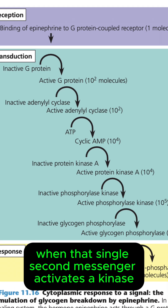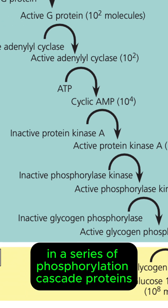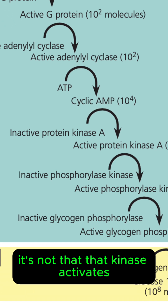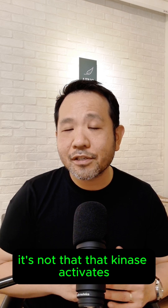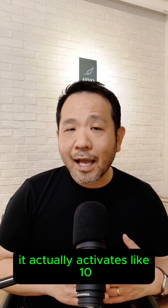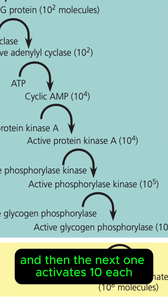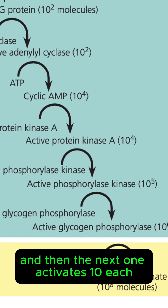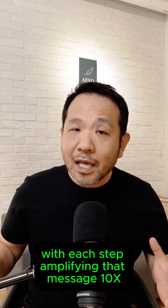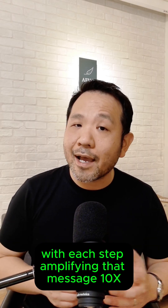You see, when that single second messenger activates a kinase in a series of phosphorylation cascade proteins, that kinase doesn't just activate one more downstream — it actually activates around 10, and then the next one activates 10 each, and the next one activates 10 each, with each step amplifying that message 10x.